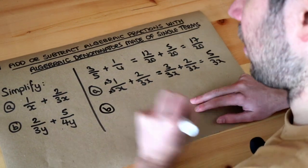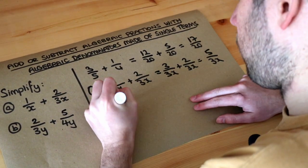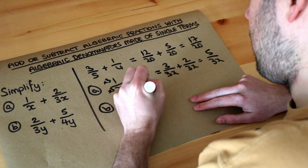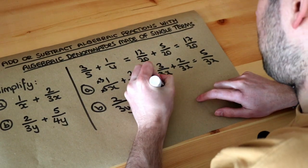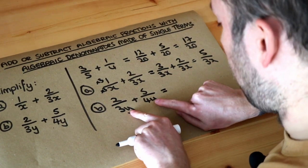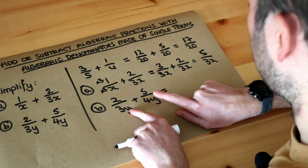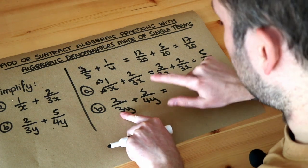What about part b? It's very similar. We've got 2/3y plus 4/5y. This one's a bit harder because you have to scale both fractions, but they've both already got a y in the denominator so we don't need to multiply by anything y-related. This is 3 and this is 4.